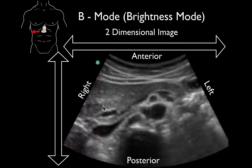Many also call it 2D mode, and this refers to the fact that there's an x-axis going across the screen and a y-axis. When we look at B-mode or 2D ultrasound, we mostly need to orient ourselves on the screen.